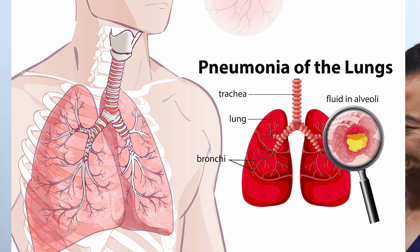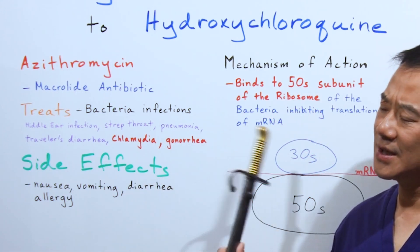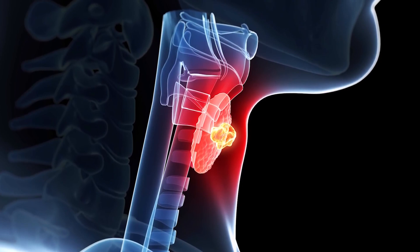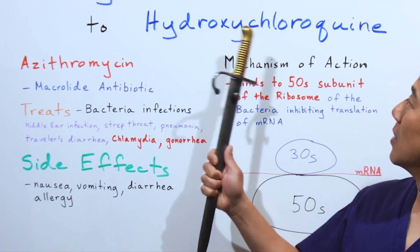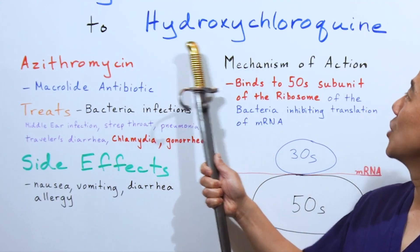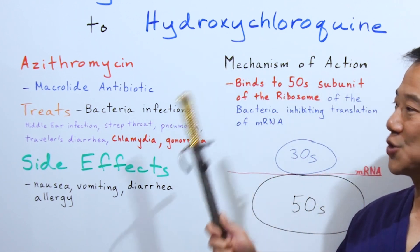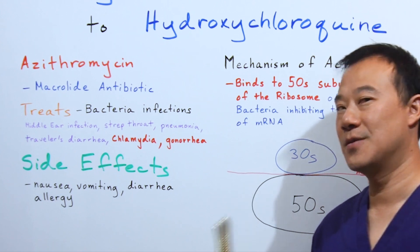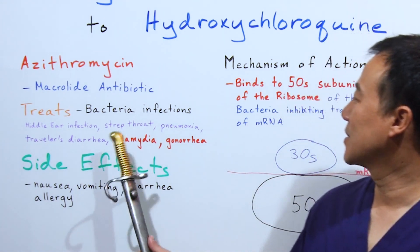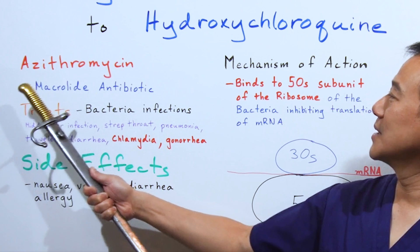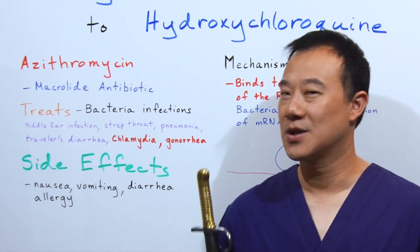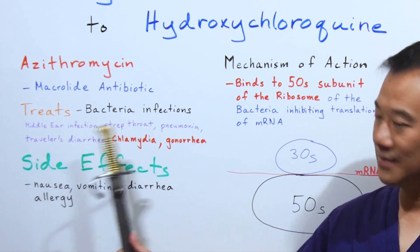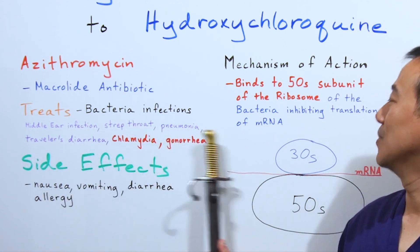Strep throat and pneumonia — what else can cause symptoms similar to strep throat and pneumonia? Pneumonia caused by a virus. Hydroxychloroquine can treat that virus, but can it treat a bacterial infection afterwards? That's why azithromycin is used — it's a broad-spectrum antibiotic that treats not only these diseases, but also strep throat and pneumonia.